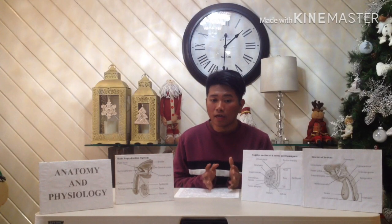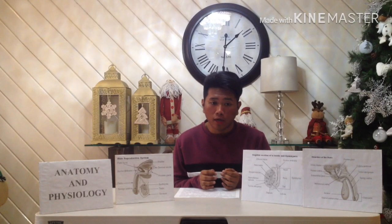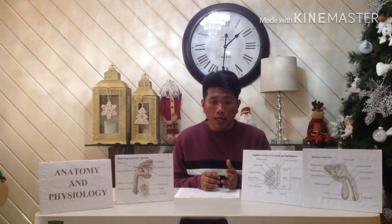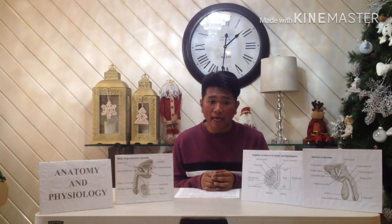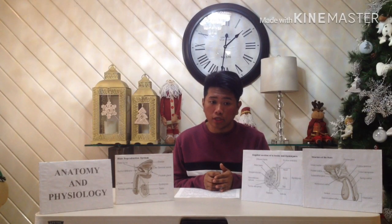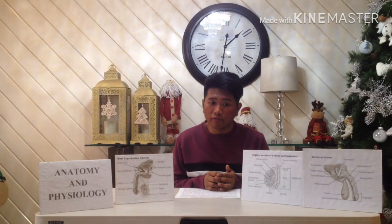If sperm and egg cells were produced by mitosis, each successive generation would have twice the number of chromosomes as the preceding one. The final step in the development of sperm is called spermiogenesis, in which the spermatids become mature spermatozoa, or sperm. The mature sperm cell has a head, midpiece, and tail. The head, also called the nuclear region, contains the 23 chromosomes surrounded by a nuclear membrane. The tip of the head is covered by an acrosome, which contains enzymes that help the sperm penetrate the female gamete.